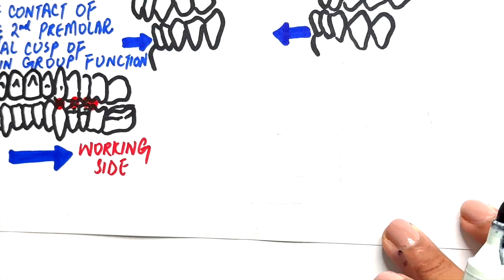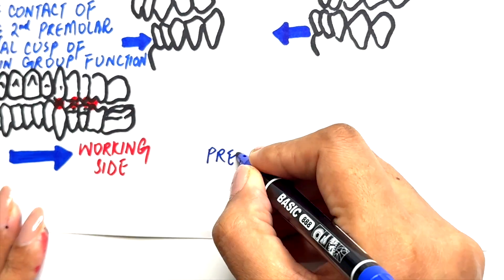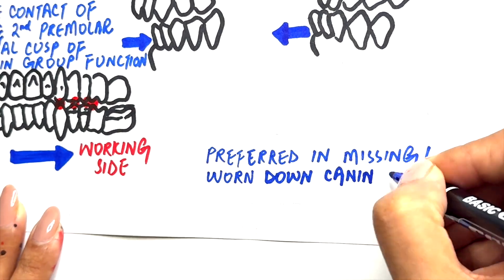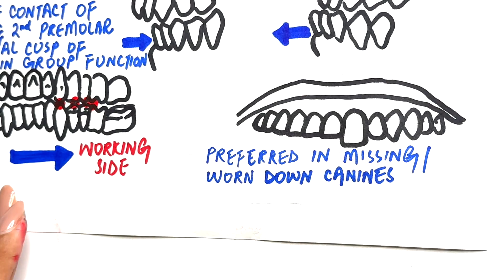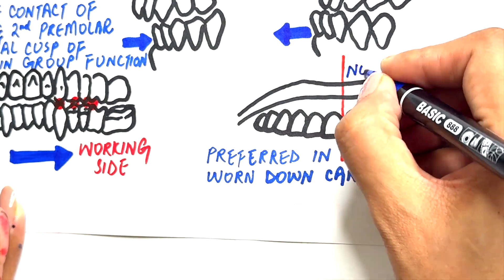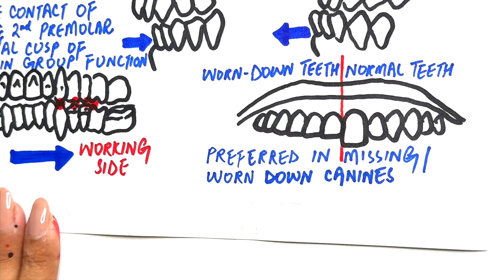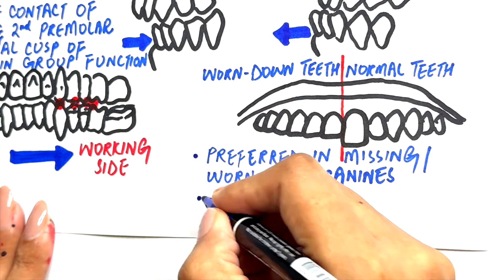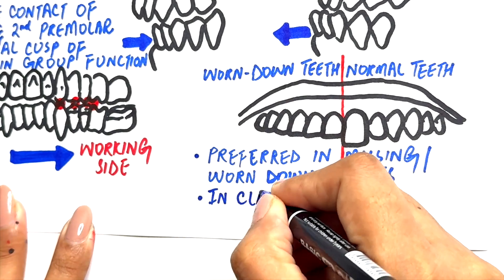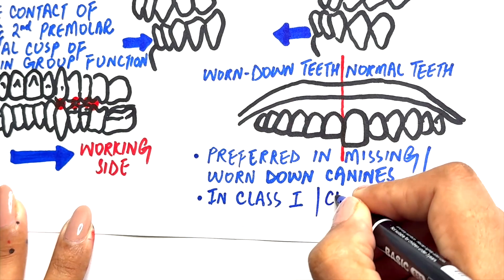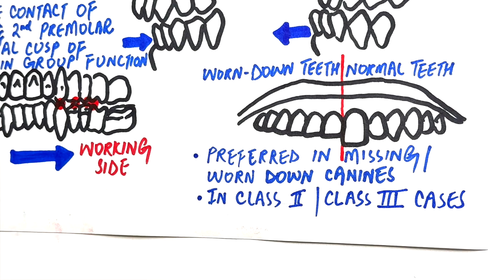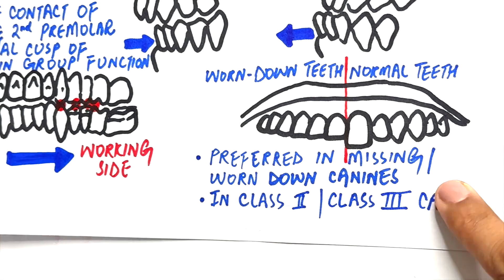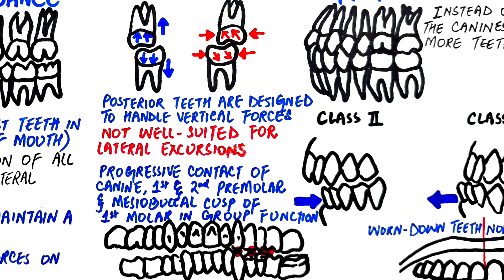Group function also becomes necessary in patients with missing or worn-down canines, especially in older adults where it often becomes the natural occlusal pattern. And in Class 2 or Class 3 malocclusions, group function becomes the primary form of occlusal guidance.